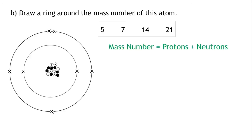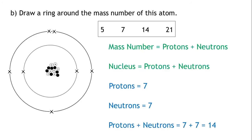The protons and neutrons are found in the center of the atom in the nucleus. So if we count up the number of particles in the center of the atom, we find there are seven protons and seven neutrons. Seven plus seven is 14. Therefore the mass number of this atom is 14.